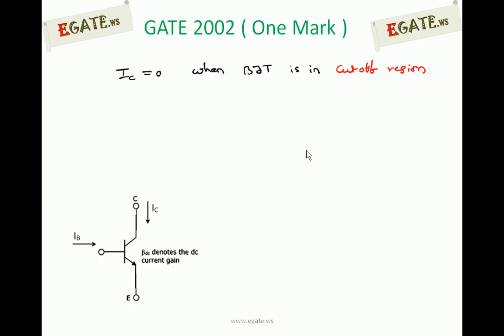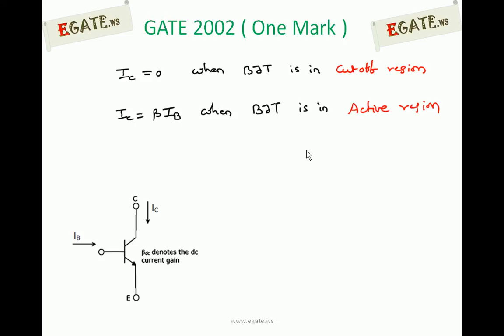This is the given diagram. Beta DC is nothing but DC current gain. When the BJT is in the cutoff region, no collector current flows — ignore the small reverse saturation currents, so IC equals zero. Whenever the BJT comes into the active region, collector current increases as base current increases. There is a linear relation: IC is equal to beta times IB.